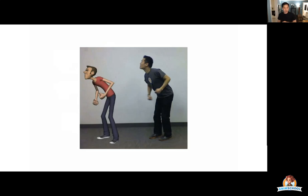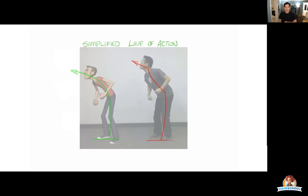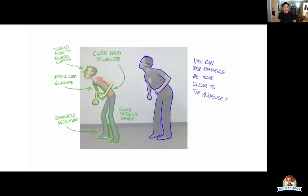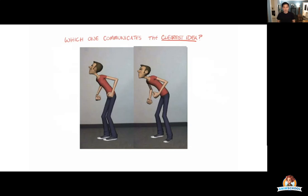Here is my pushed pose on the left compared to the original on the right. I simplified my line of action and clarified a lot of those silhouettes — it can always be clearer. Never rotoscope. Every pose you make from your reference could always be clearer, even just one percent. You can see the difference between the first and the last version.